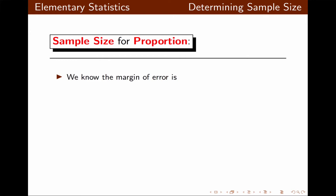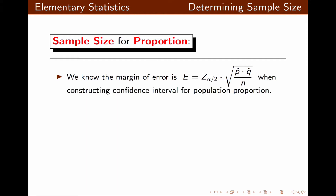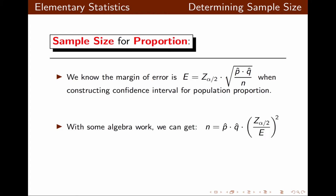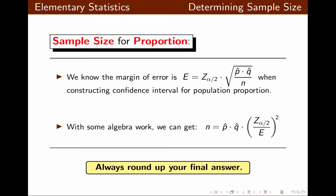We know from past that the margin of error is Z alpha over 2 times the square root of P-hat times Q-hat divided by n when constructing a confidence interval for population proportion. With some algebra work, we get n equal to P-hat times Q-hat times the quantity Z alpha over 2 over e, to the second power.